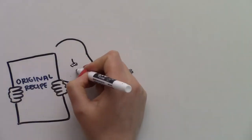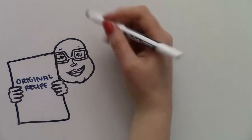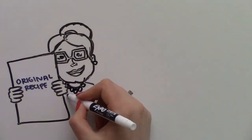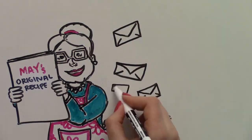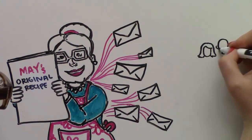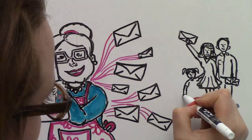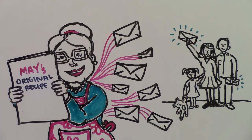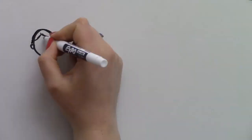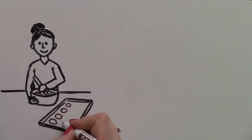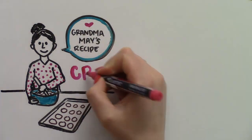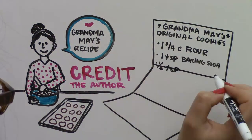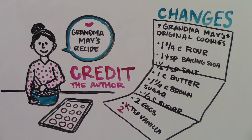Just like code, all recipes start with somebody writing the original version. In this case, Grandma May has developed a delicious cookie recipe. She shares it with her family, telling them they can use her recipe as long as they follow her rules. Anyone who bakes cookies with her recipe has to credit her as the author, and if they make changes to her recipe, she has to be allowed to use those changes in future versions.